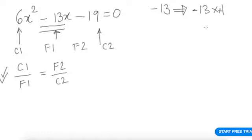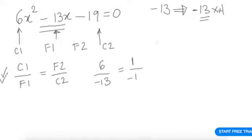By trial and error: if we try −13 × 1, giving factors −13 and +1, does it give us the ratio c1/f1 = f2/c2? What is c2? It comes out to −19. Are they equal? The answer is no, and hence this is not the correct factorization.